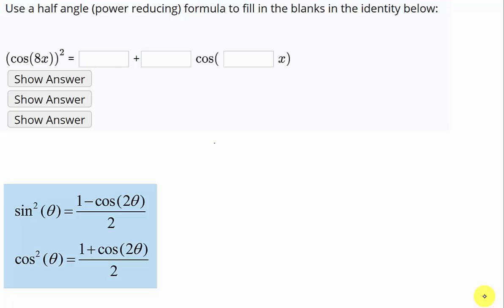So we want to use a half angle or power reducing formula. It's not in the form of how we've been using the half angles because we didn't get rid of the squared function. We could have square rooted both sides and it would have looked like the half angle.